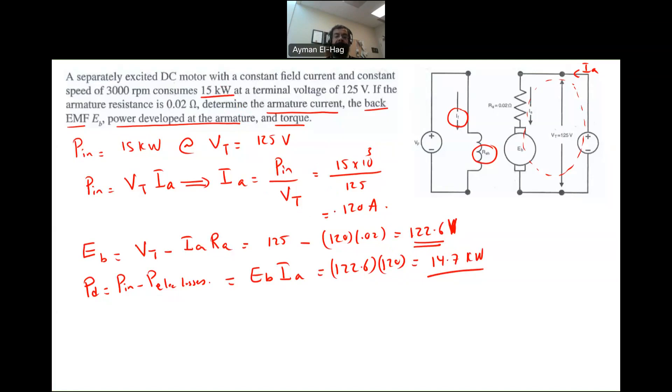Then we want to find the torque developed at the armature. So the torque developed at the armature is equal to T times omega. The mechanical power is equal to the P developed. We have different power. We have P out. We have P in. We have P developed.